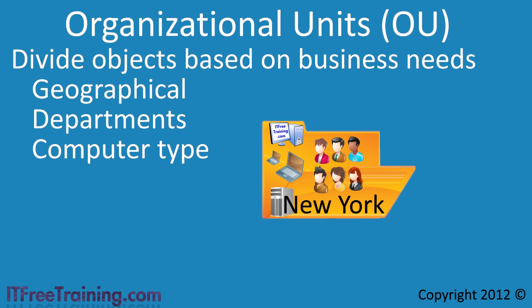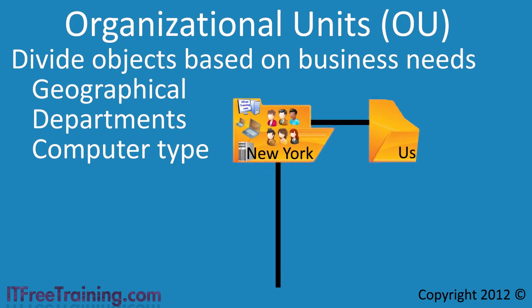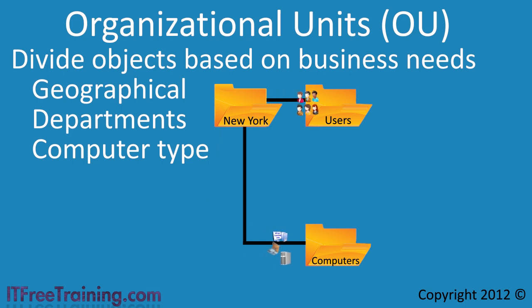OUs are like folders on a hard disk. On a hard disk you would create new directories to organize files. Like the directories on a hard disk, OUs form the containers that allow Active Directory objects to be organized. In this case I will create two new OUs under New York called Users and Computers. This is one way to separate objects in Active Directory. In the real world it is up to the individual administrator to decide which OUs they want to create and where they want to put the objects.